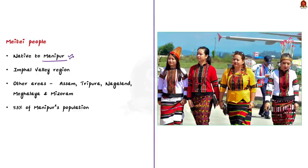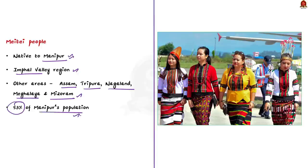The Meitei people primarily live in the Imphal Valley region in modern-day Manipur. They are also present in Assam, Tripura, Nagaland, Meghalaya, and Mizoram. The Meitei ethnic group represents 53% of Manipur's population. There is also a notable presence of Meitei in neighboring countries of Myanmar and Bangladesh.